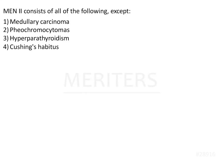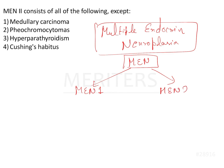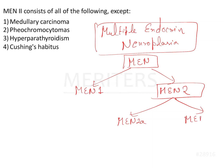MEN2 consists of all of the following except — to understand this, we need to know about MEN syndrome, which stands for Multiple Endocrine Neoplasia. There are four types, but MEN1 and MEN2 are the most important. Within MEN2, we have MEN2a and MEN2b. MEN1 can be remembered with the mnemonic 'Triple P', MEN2a as 'PPM', and MEN2b as 'PMM'.